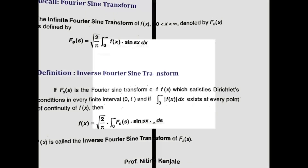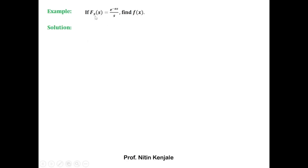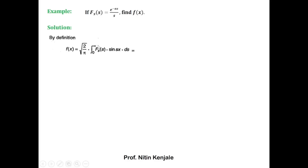Now we see examples on each of these two definitions. First: if F_ss = e^(-as)/s, find f(x). Here we are indirectly asked to find the inverse Fourier sine transform of F_ss. By definition, f(x) = root(2/π) into integration of F_ss × sin(sx) ds over the limit zero to infinity. We substitute F_ss = e^(-as)/s — we label this equation one. To evaluate this integral we will differentiate both sides using the differentiation under integral sign concept.